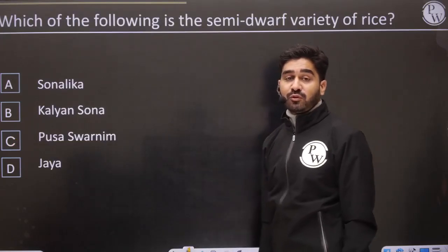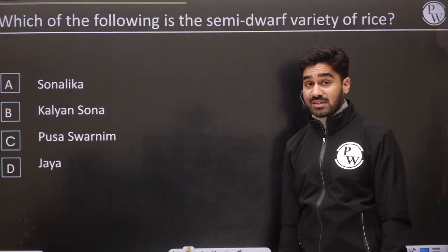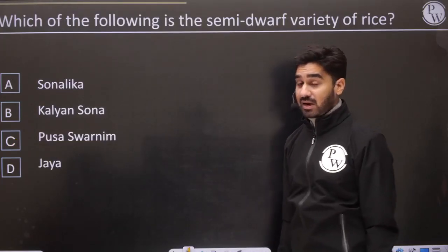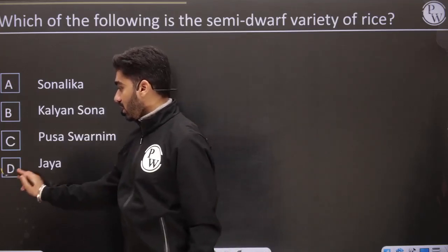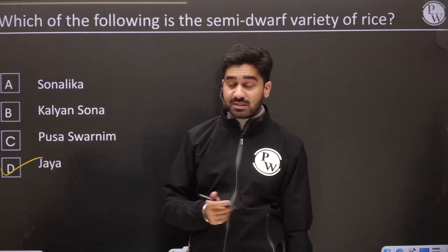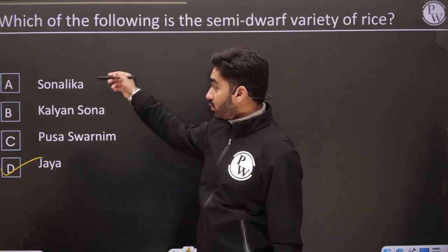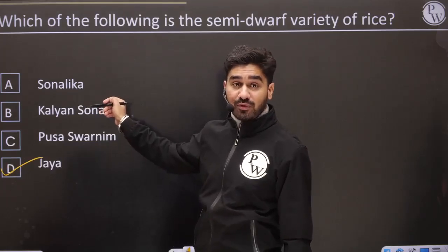Which of the following is a semi-dwarf variety of rice? Jaya and Ratna are semi-dwarf rice varieties. Sonalika and Kalyan Sona are semi-dwarf wheat varieties.